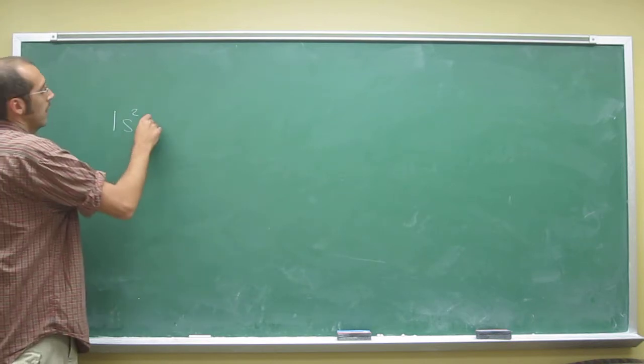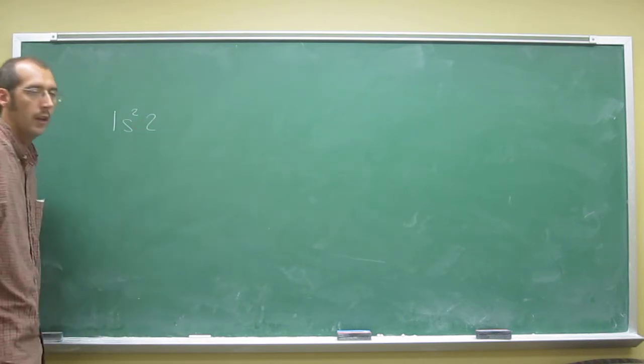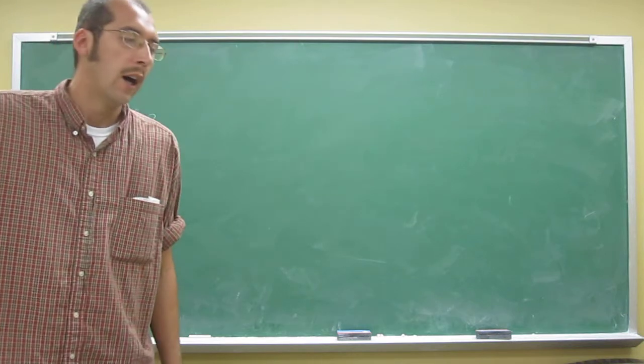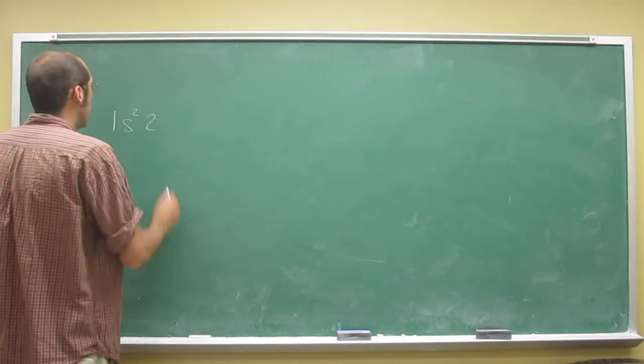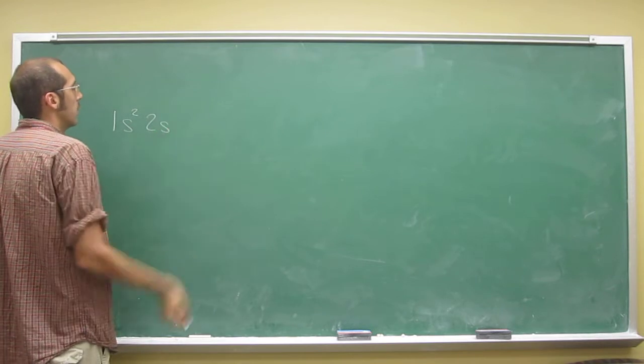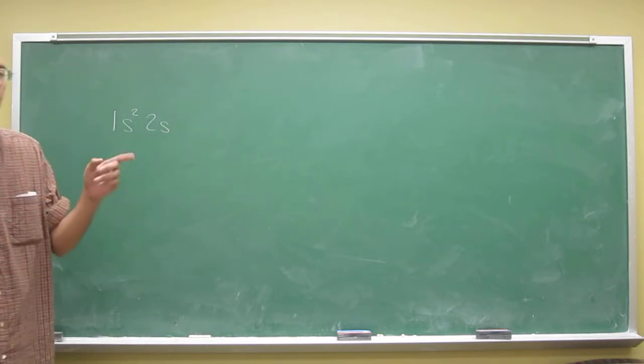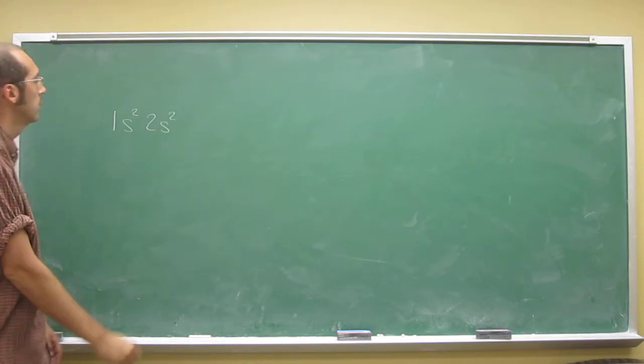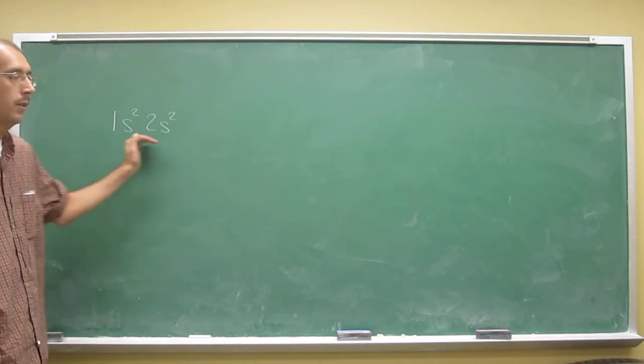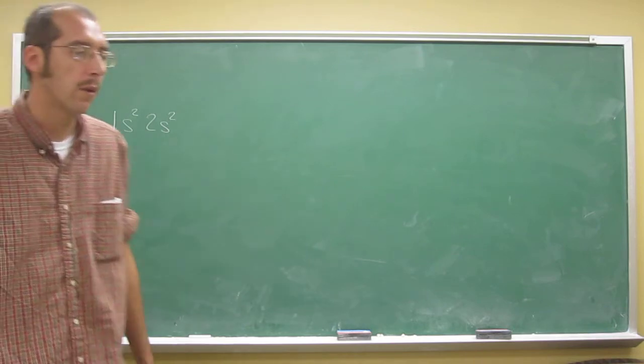And remember s orbital is the first one that's filled, so 2s. And then you look, lithium, beryllium are the first two elements on that period, so 2. So in fact this would be the electron configuration for beryllium.